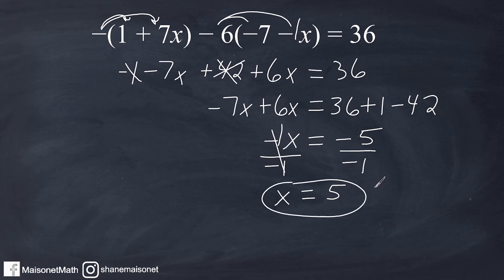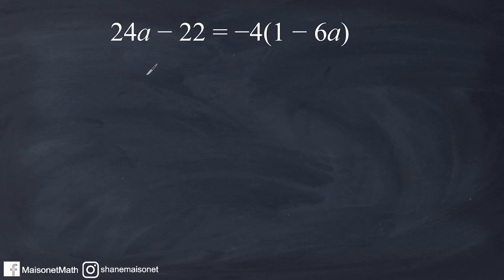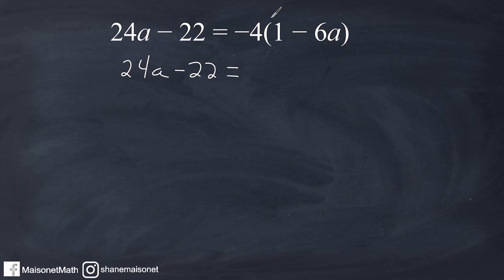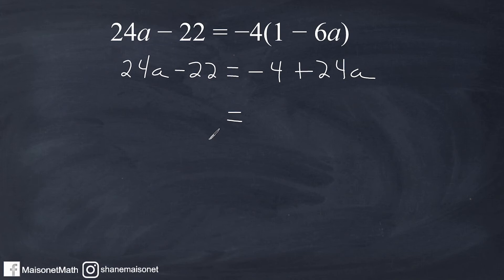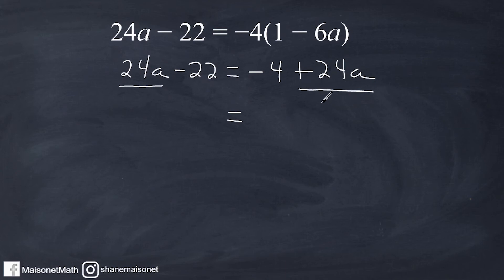Let's go ahead and do a third example. There's nothing we can simplify on the left-hand side, so I'm just going to bring down everything on the left: 24a minus 22 equals... On the right-hand side, we have to distribute this negative 4 to each term inside the parentheses. So negative 4 times positive 1 is negative 4, and negative 4 times negative 6a is positive 24a. Now I can see at this point that this equation is going to have no solution — whenever you get an 'a' term that is exactly the same on both sides of your equal sign, like 24a here and 24a here, and they're both positive or both negative, that is going to result in a problem that has no solution.